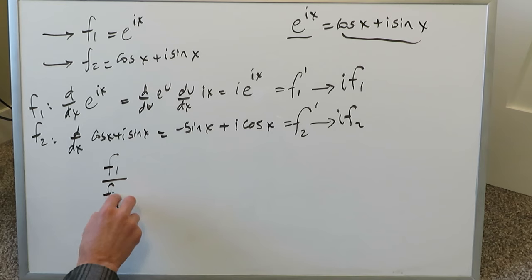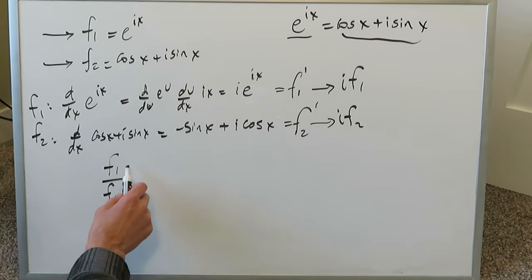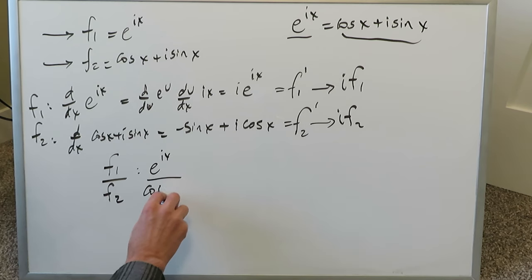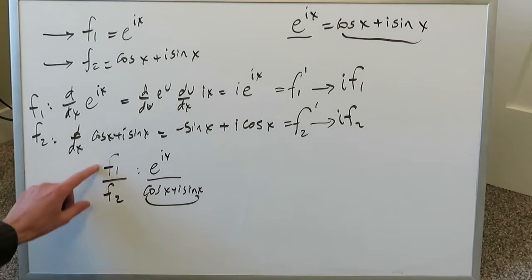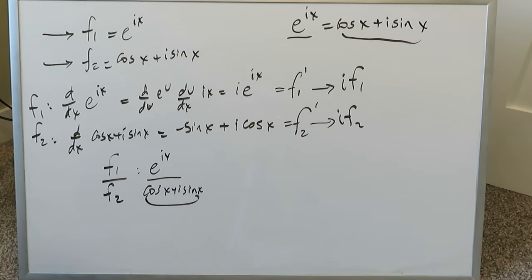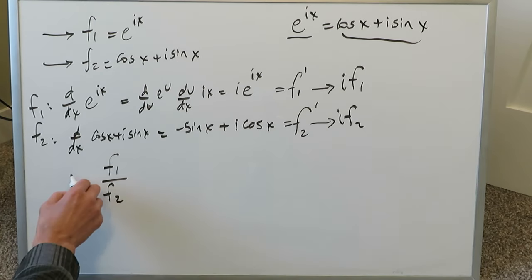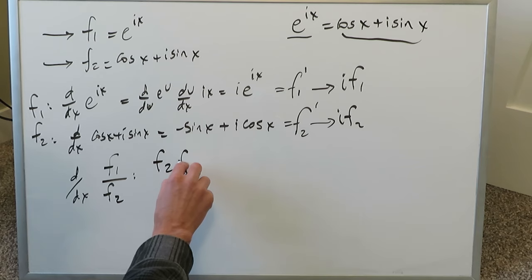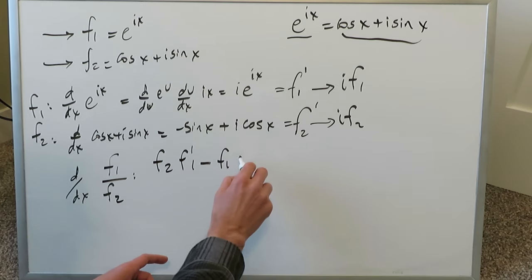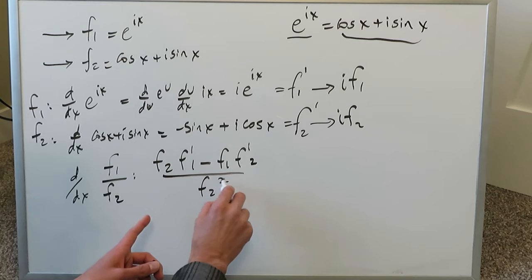What we need to do now is apply f1 and f2 in a format such that we come up with a good meaningful result. A good format is the quotient of f1 and f2. The reason is rather clear: the expression cosine x plus i sine x represents a unit circle, and everything on that unit circle is defined. So when we put this into quotient form f1 over f2, we apply the quotient rule: f2 times the derivative of f1, minus f1 times the derivative of f2, all divided by f2 squared.